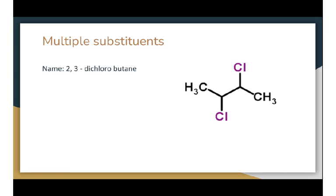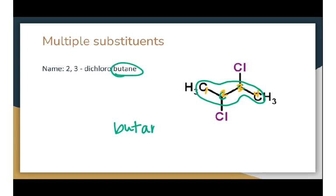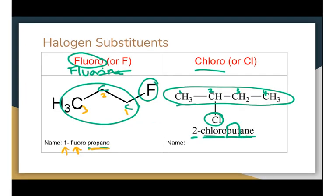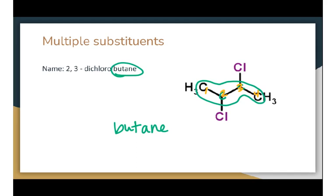What if I have multiple substituents? Remember, there are carbons at every one of those bends — the purples are chlorine, not carbon. I'm going to circle my longest carbon chain, and it's 4 carbons: 1, 2, 3, 4. So that's butane — butte for 4, and -ane for single bonds. And then I have 2 chloro groups. How do I say 2 in science? Di. So dichloro. And I have to say where they are — one of them is attached to my second carbon and one is attached to my third carbon. I separate those with a comma: 2,3-dichlorobutane.